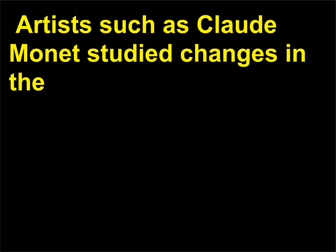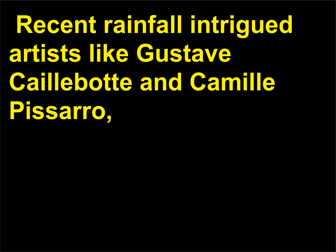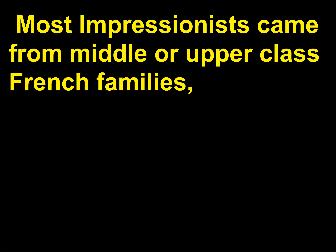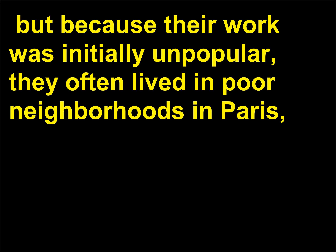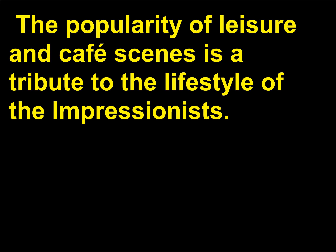Artists such as Claude Monet studied changes in the colors of the atmosphere as the sun moved through the sky. Recent rainfall intrigued artists like Gustave Caillebotte and Camille Pissarro, who both painted natural light and light from gas lamps that reflected off the rain-soaked streets of Paris. Most Impressionists came from middle or upper class French families, but because their work was initially unpopular, they often lived in poor neighborhoods in Paris, frequently gathering at the Café Guerbois in the Montmartre district.